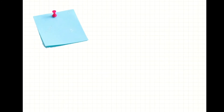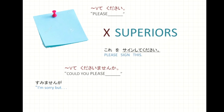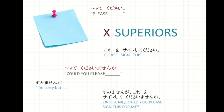Just a short note before this video ends. The pattern verb te kudasai, which means please, cannot be used to instruct superiors. We have the pattern verb te kudasai masen ka, which means could you please, and it is usually used with the expression sumimasen ga, meaning I'm sorry but or excuse me. For example, if you are a student and want your teacher to sign something, instead of kore wo sain shite kudasai, you would say: sumimasen ga, kore wo sain shite kudasai masen ka — excuse me, could you please sign this for me?